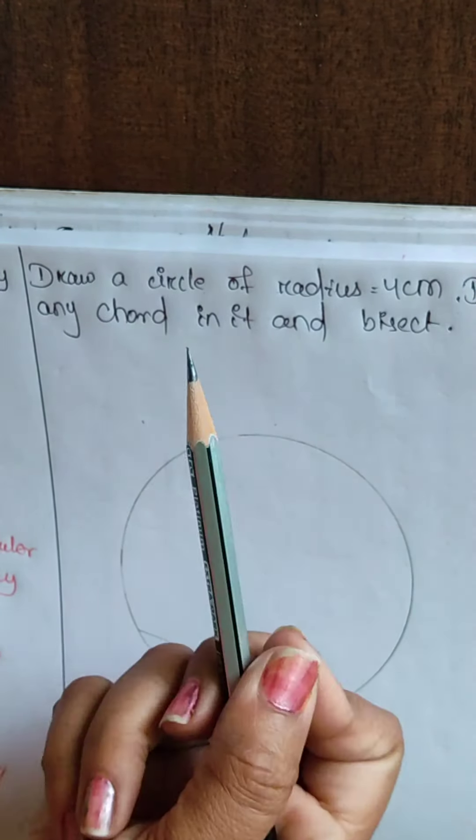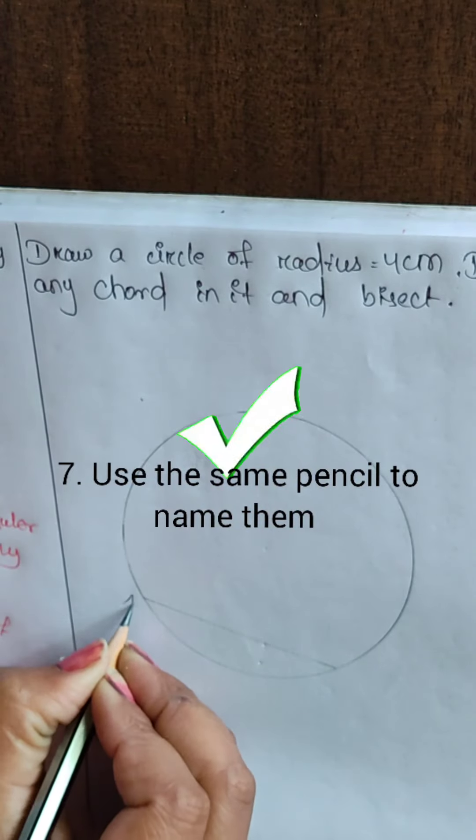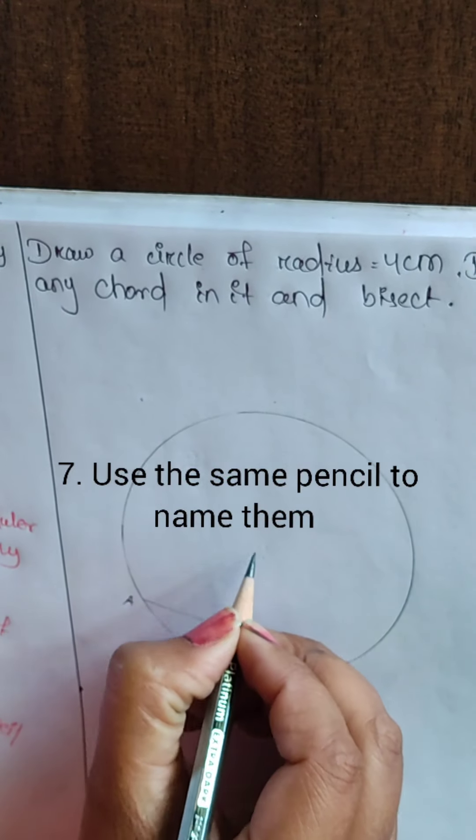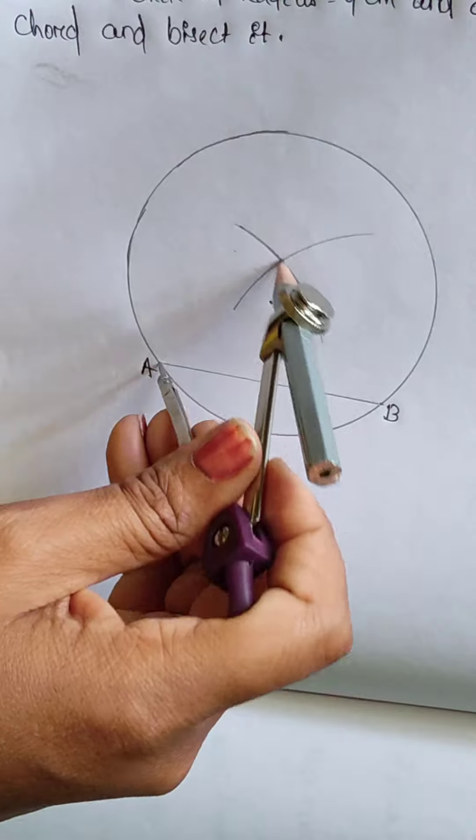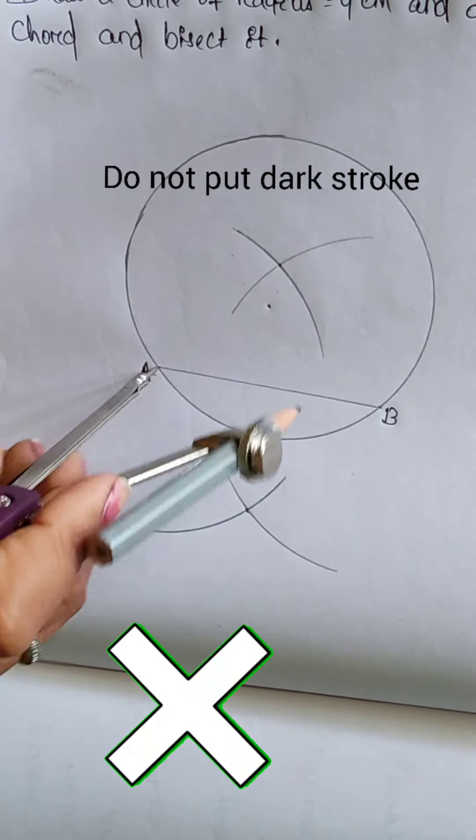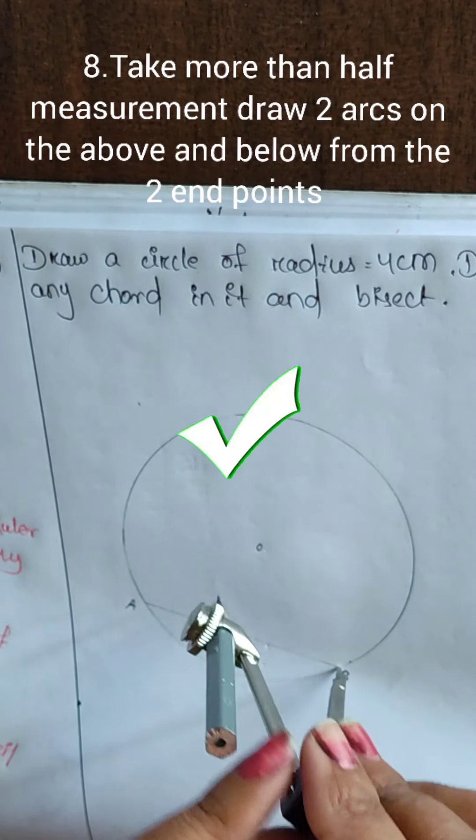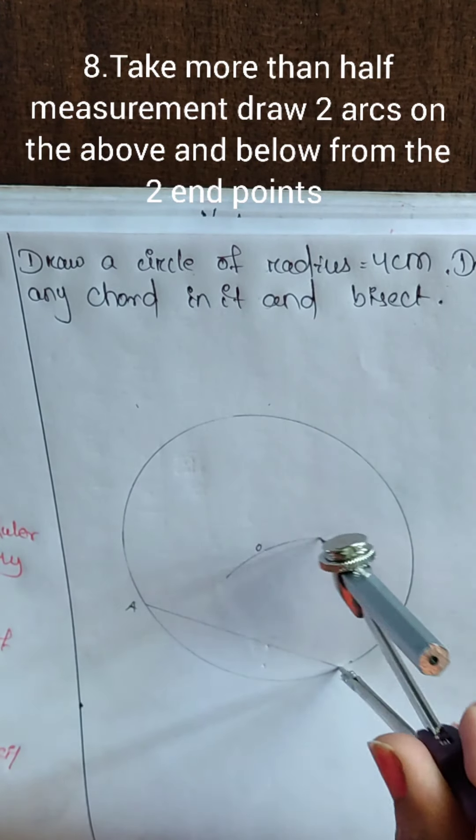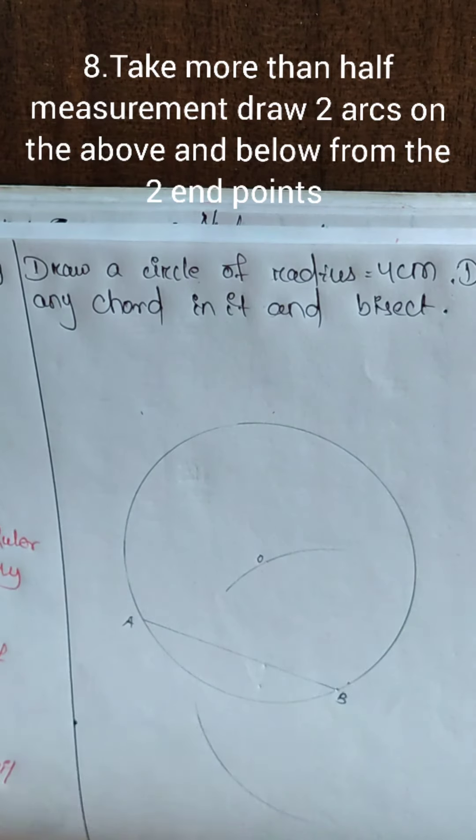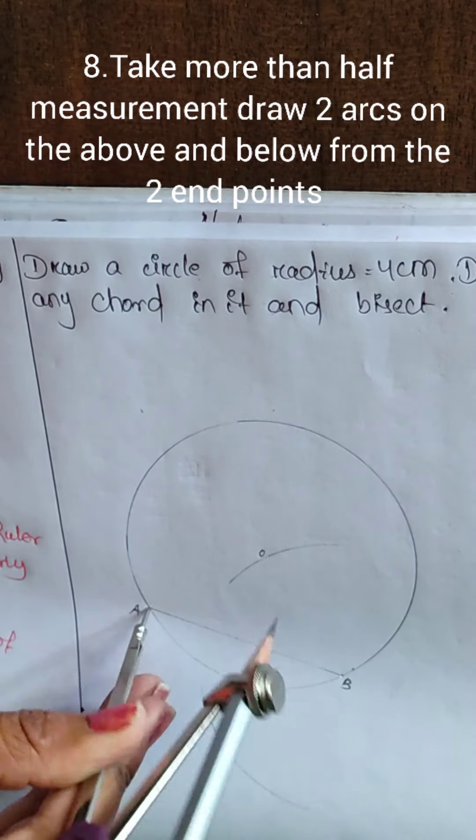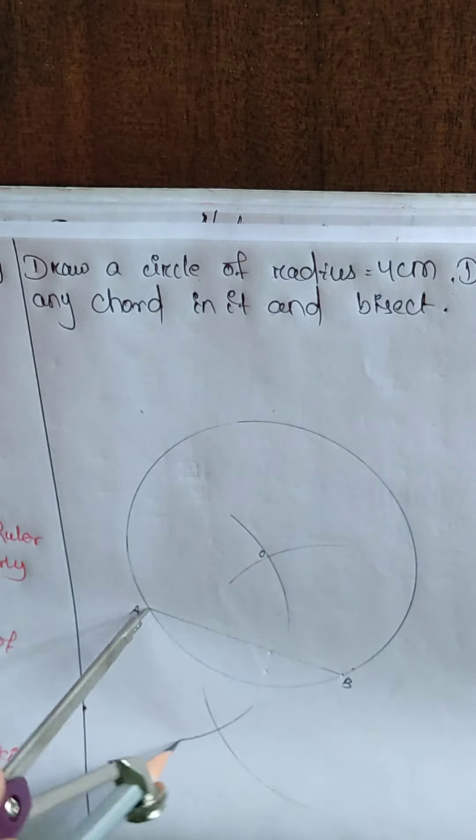Use another sharpened pencil to draw. Give light strokes. Use the same pencil to name them. Do not put dark strokes. Take more than half measurement. Draw two arcs on the above and below from the two end points. And give light strokes.